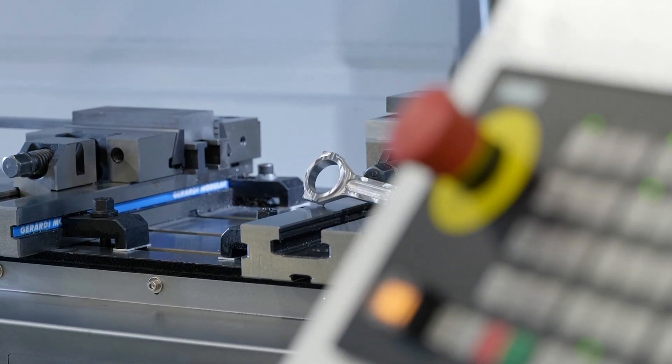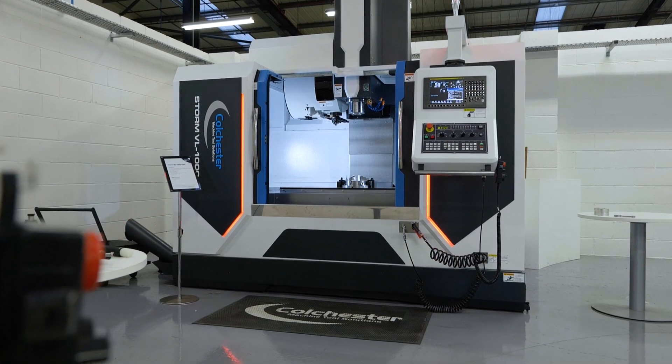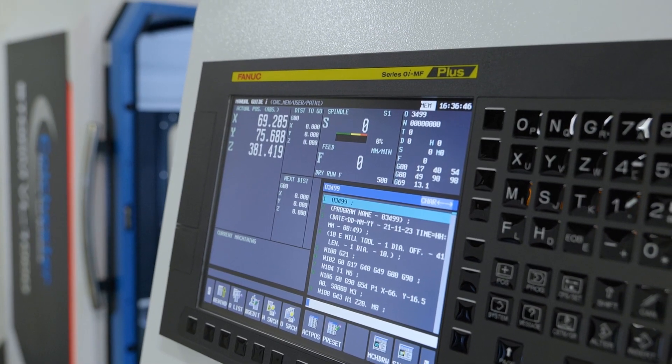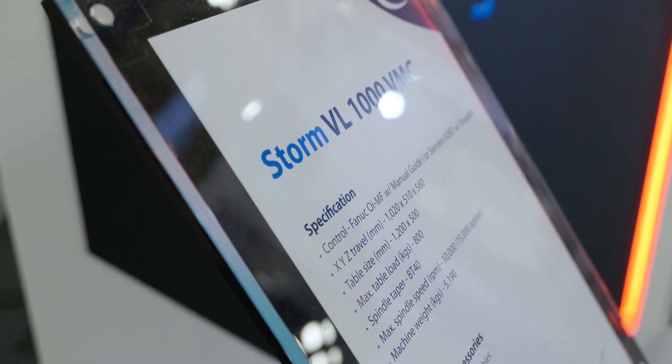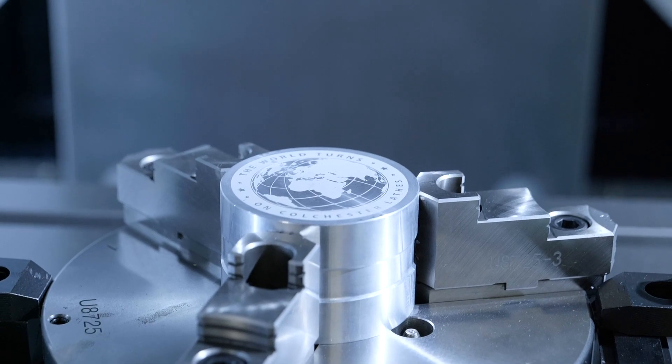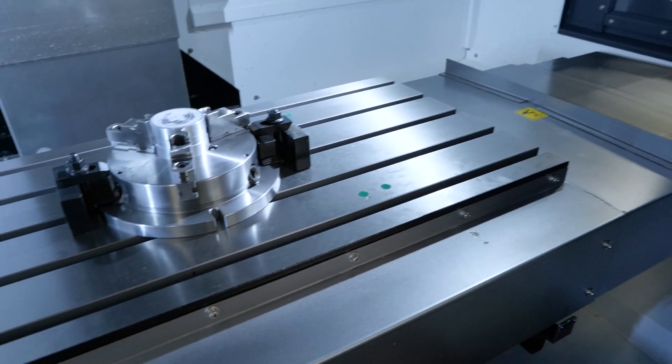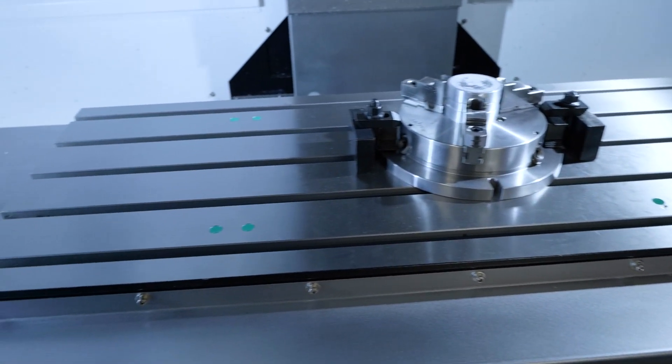How long have you had these machines for? We've had these now for about six months, doing really well with them. There's quite a few out there. A good range as well, starting at the 550 in the X-axis. This is a 1,000 machine, so it's mid-range. We do 1,200, 1,400, 1,600 as well. We can go bigger, but not from stock.